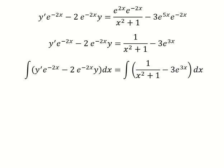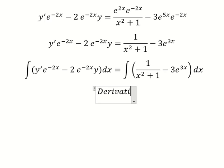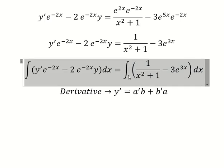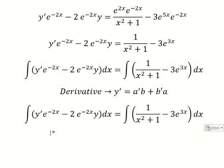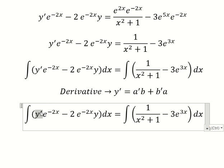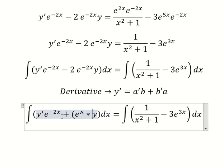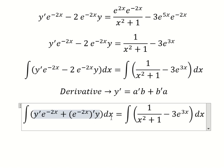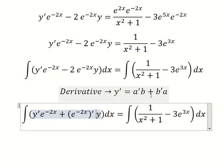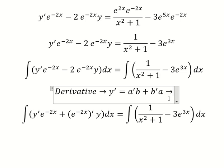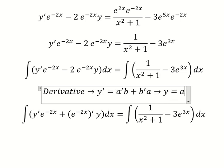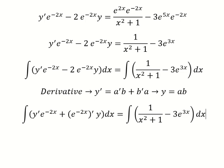Next we can apply the differential rule. So we have the formula in here: the first derivative of a multiplied by b, plus the first derivative of b multiplied by a.